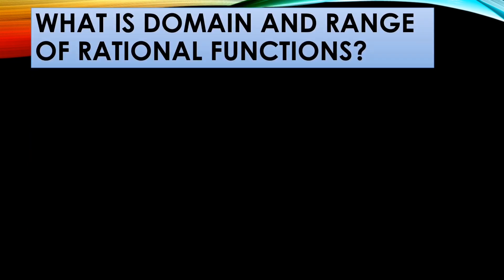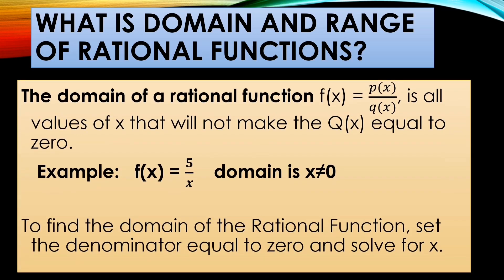What is the domain and range of rational functions? The domain of the rational function f(x) = p(x) over q(x) is all values of x that will not make q(x) equal to zero. For example, f(x) = 5 over x — the domain is x is not equal to zero, because if the value of x is equal to zero, that will be undefined.